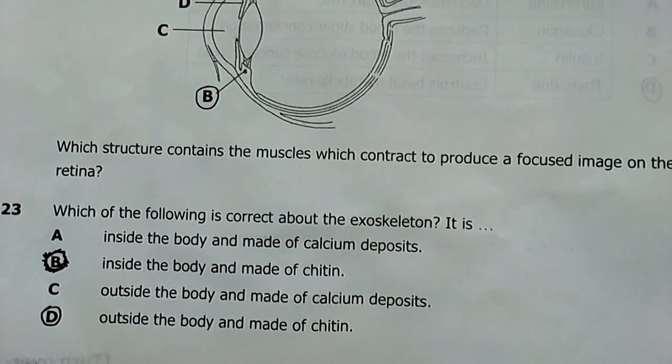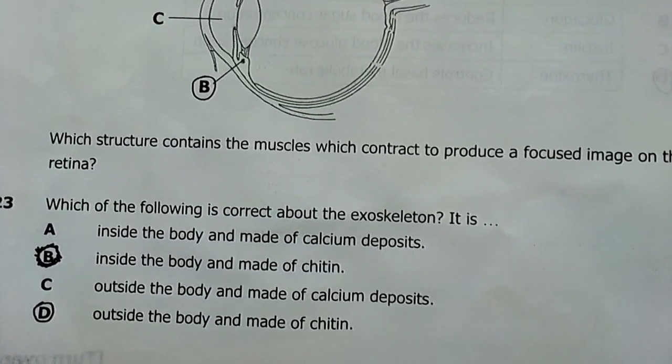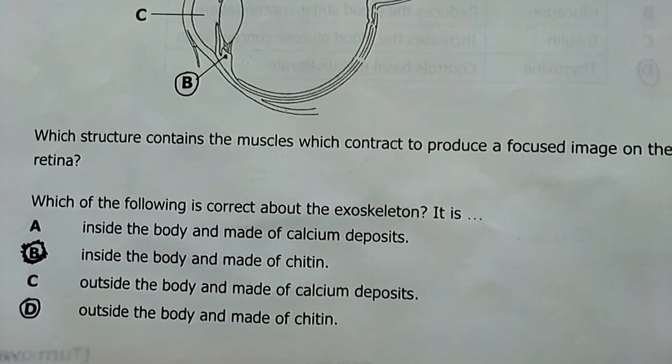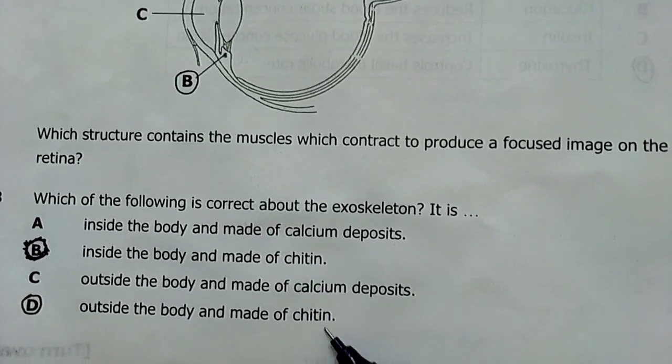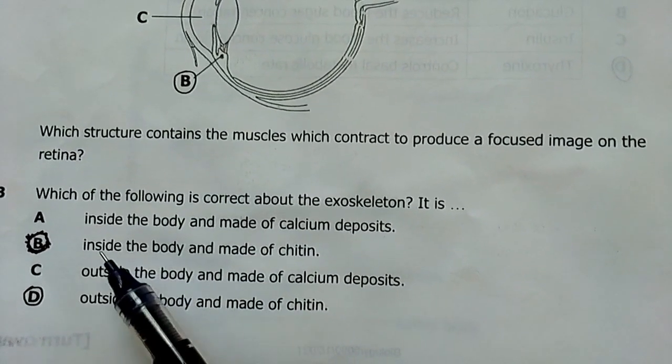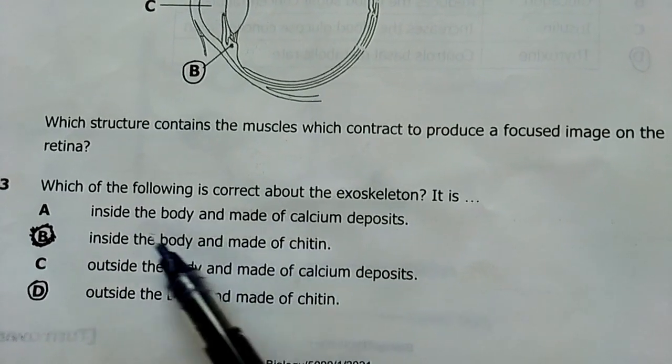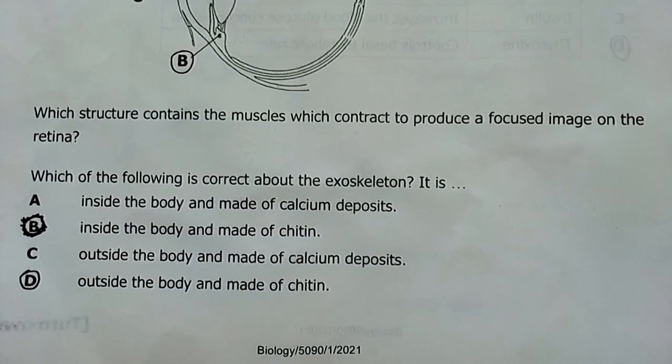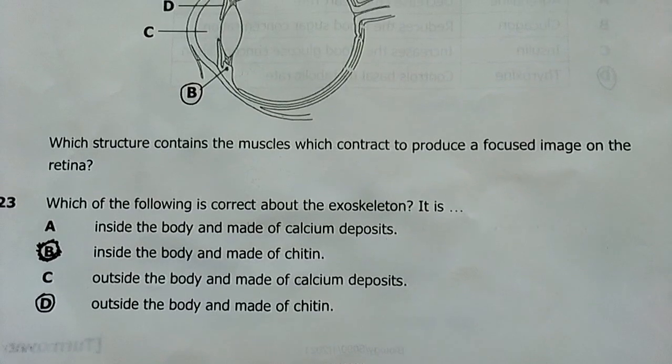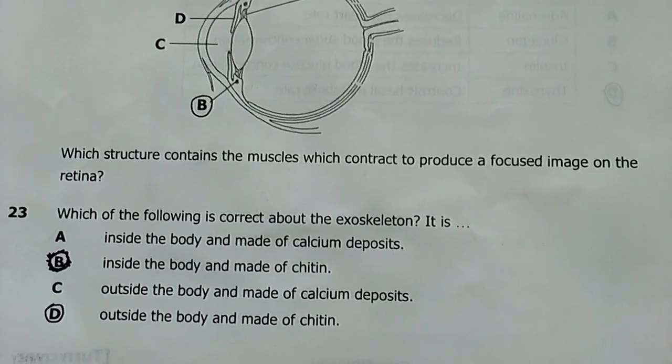Number 23, which of the following is correct about this exoskeleton? It's outside the body and made of chitin. It's actually outside, exo, not endo. There are three types, exoskeleton, endoskeleton, and hydrostatic. My answer here is D.